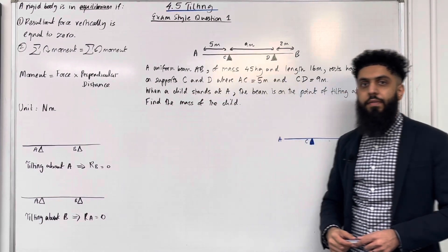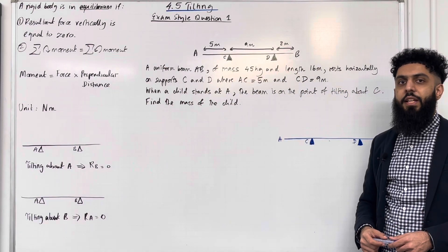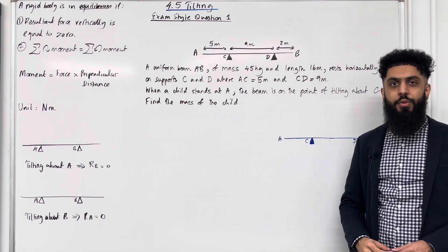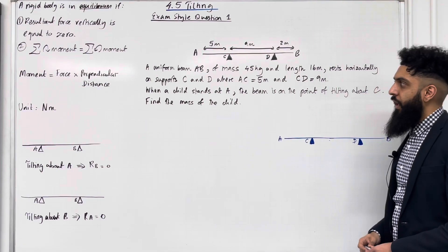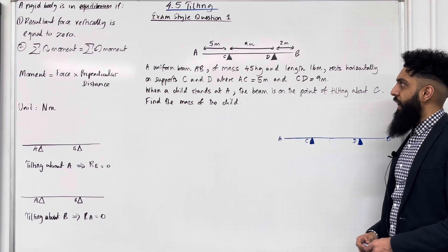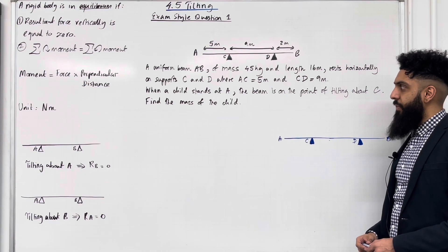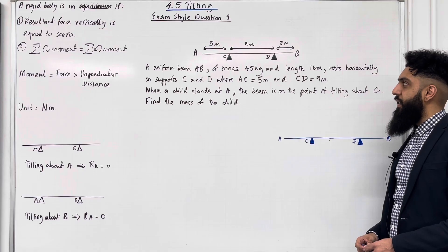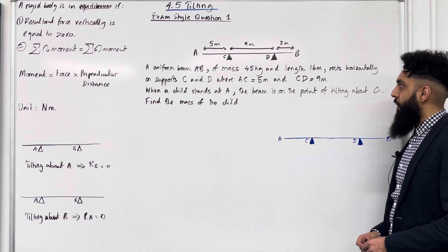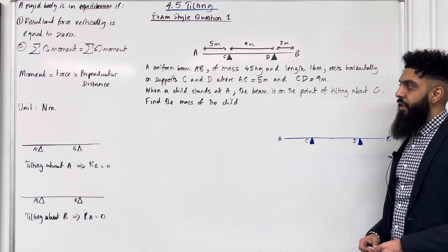Those are the key facts of 4.5 Tilting. I'll be implementing these key facts within exam-style questions. Here is exam style question 1. A uniform beam AB of mass 45 kg and length 16 metres rests horizontally on supports C and D, where AC is 5 metres and CD is 9 metres. When a child stands at A, the beam is on the point of tilting about C. Find the mass of the child.